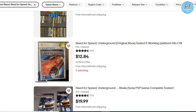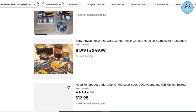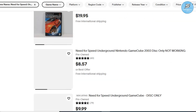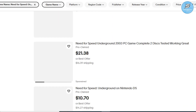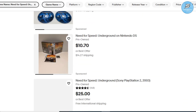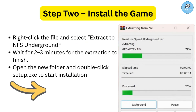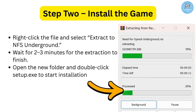Step two is to install the game. If your copy is in a compressed format like .zip, .rar, or .iso, make sure it's a personal backup of your original disk. Right-click the file and select 'Extract to NFS Underground', then wait two to three minutes for the extraction to finish. Open the new folder and double-click setup.exe to start the installation. Once installed, don't launch it yet — we will make sure it runs perfectly on modern systems.